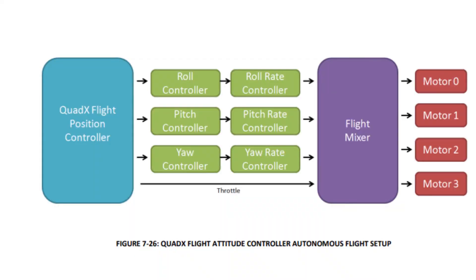We talked about using a PID controller to control the angular rate, and then stacking a controller on top to control the actual angle. And remember: by controlling a quadcopter's angle, you can also control its position. If you stack another controller on top of the angle controller, you get a position controller — that's how some drones are able to follow a certain flight plan. But first, let's apply a cascade PID controller for angle and angular rate to our drone, hopefully achieving level flight.